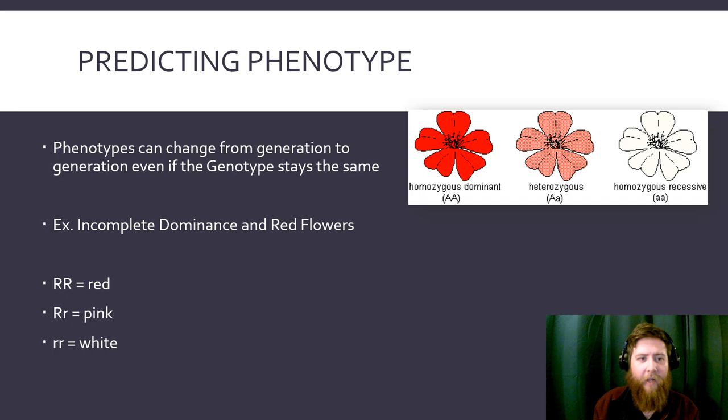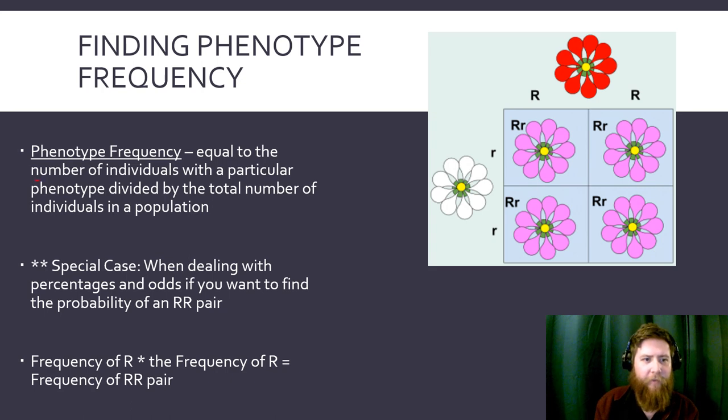So we can predict phenotypes. Phenotypes can change from generation to generation, even if the genotype stays the same. Even though we have incomplete dominance here, where big A equals red, this one equals pink, and this one equals white, we're going to jump into how to find the phenotype frequency. Phenotype frequency is equal to the number of individuals with a particular phenotype divided by the total number of individuals in a population. If you want to, this is a special case, when dealing with the percentages and odds, if you want to find the probability of a big R, big R pair, you would find the frequency of R times the frequency of R, and that is going to equal the frequency of what it would be to get both of those. Remember that if you're doing percentages, we times percentages together to get both of those happening.